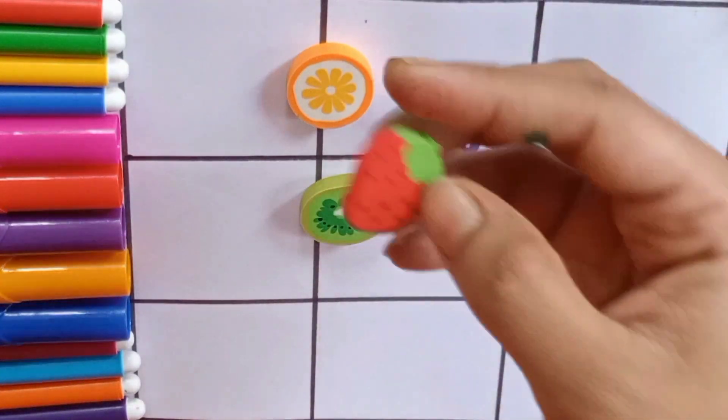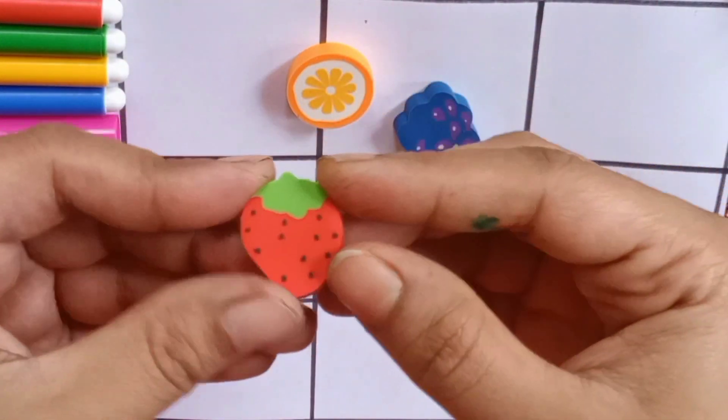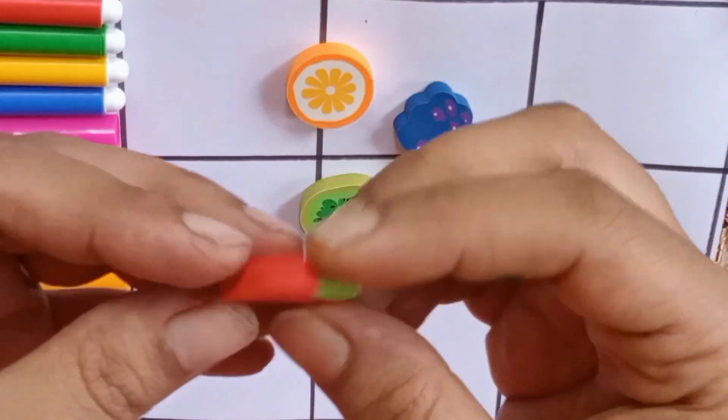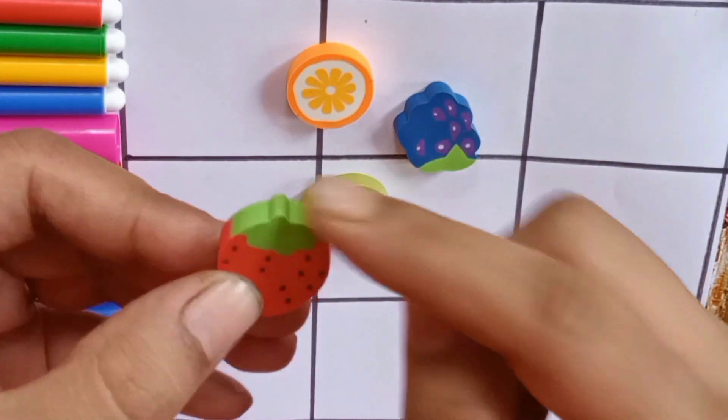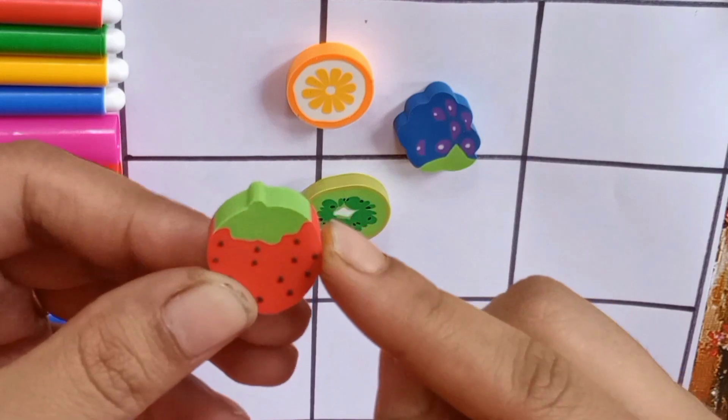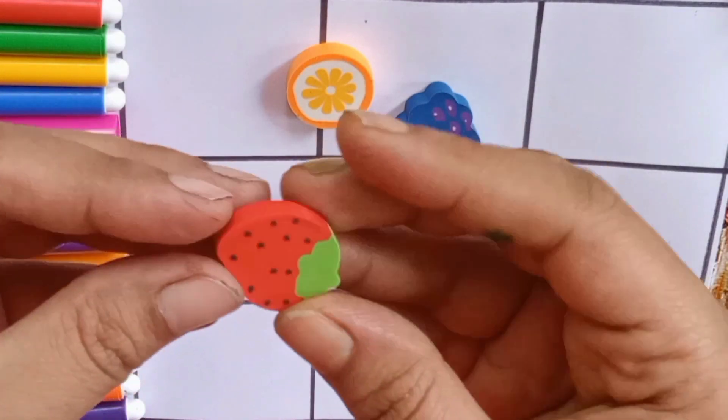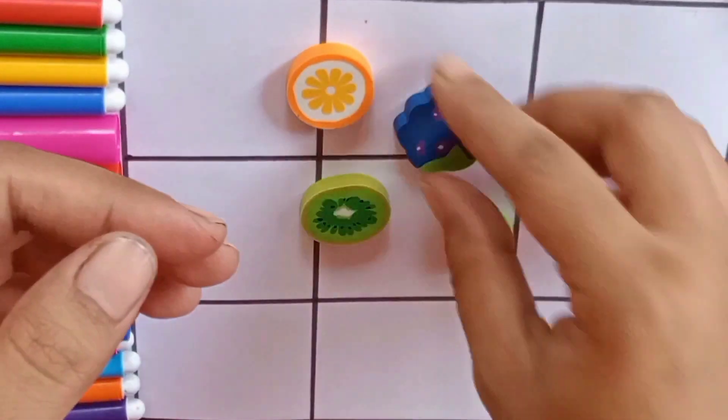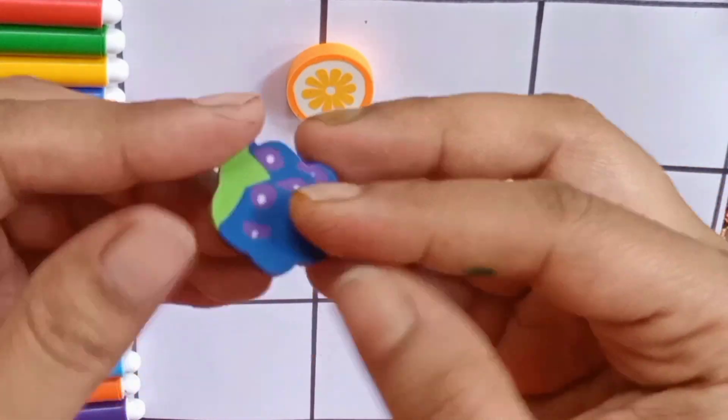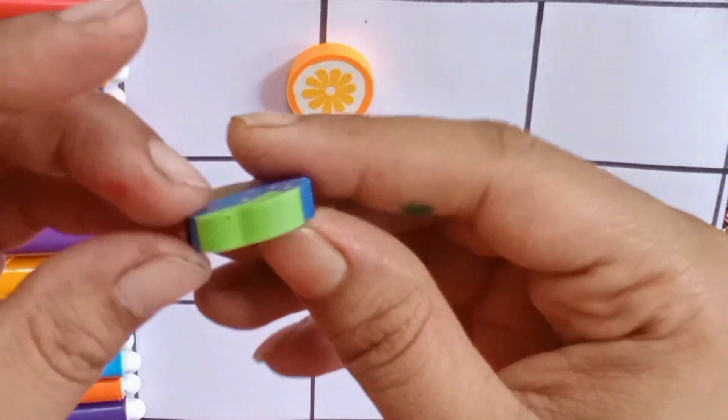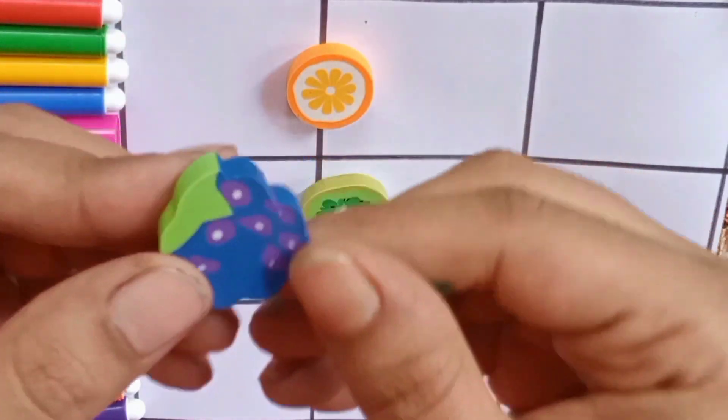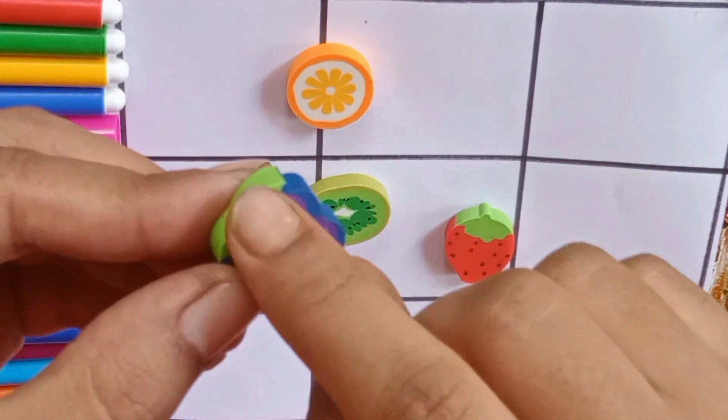Let's learn their names. This is strawberry slices. Green color, red color. This is grape. Blue color, green color.